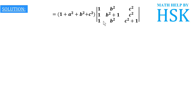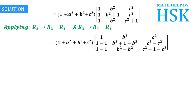Applying R2 → R2 − R1 and R3 → R3 − R1, we subtract the elements of row 1 from rows 2 and 3. This gives: in column 1, entries 1−1 = 0 for both R2 and R3; in column 2, b²+1−b² = 1 for R2 and b²−b² = 0 for R3; in column 3, c²−c² = 0 for R2 and c²+1−c² = 1 for R3. So we get 0, 1, 0 in R2 and 0, 0, 1 in R3.